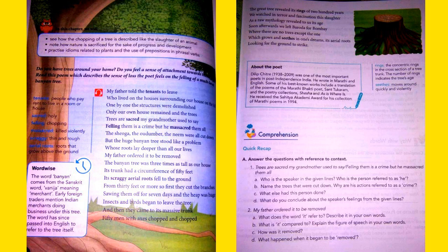So let us start. Just see, match with me along with your book. My father told the tenants to leave who lived on the houses surrounding our house on the hill. One by one the structures were demolished, only our own house remained and the trees. Trees are sacred my grandmother used to say, felling them is a crime, but he massacred them all. The shioga, the audambar, the neem were all cut down.